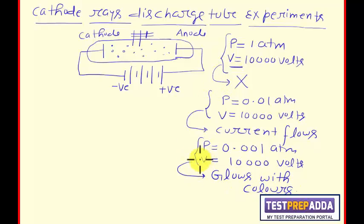And this time we found that the tube glows with different colors. These were the observations. Now after these observations, when further investigation was done, we found that the fluorescence in the tube was due to some rays originating or coming from cathode. And we gave the name to these rays as cathode rays.